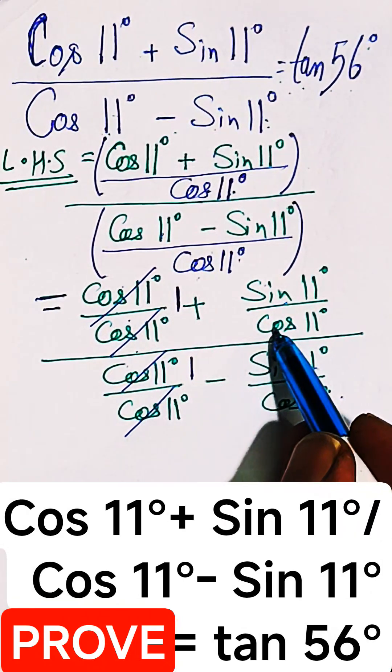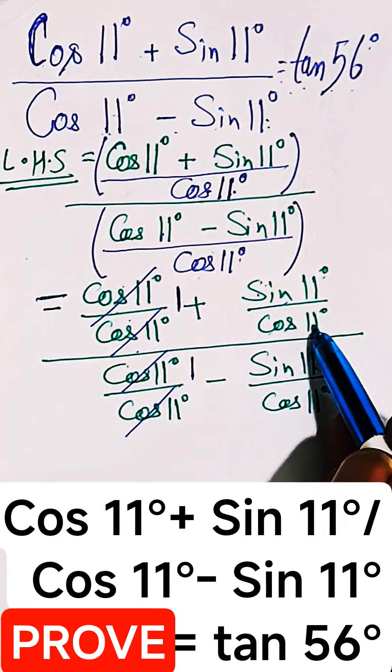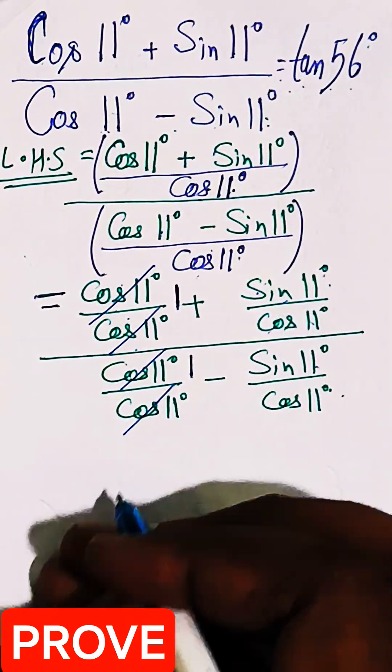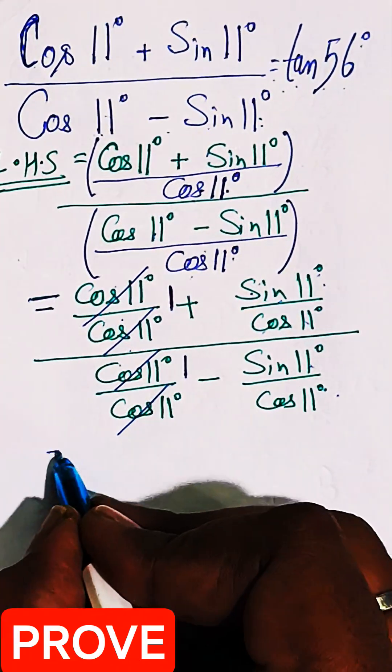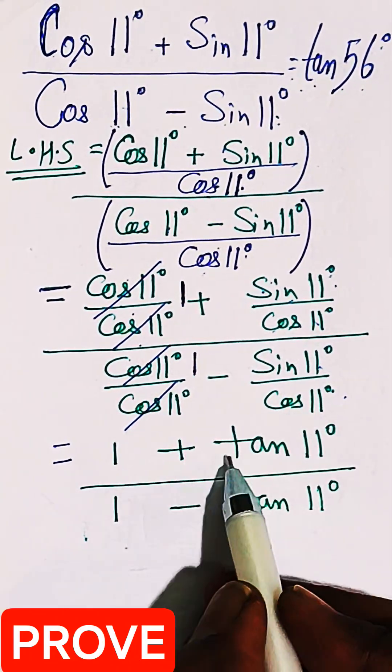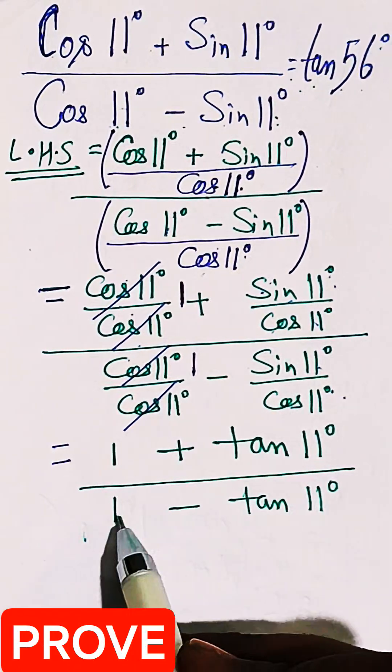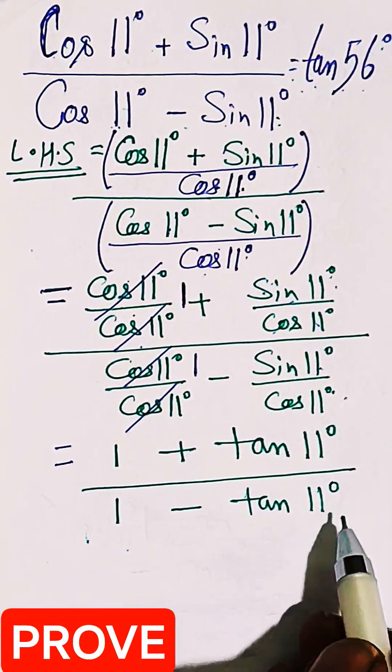And sin by cos is tan. So sin 11 by cos 11 is tan 11. So the entire LHS will be simplified to 1 plus tan 11 degrees by 1 minus tan 11 degrees.